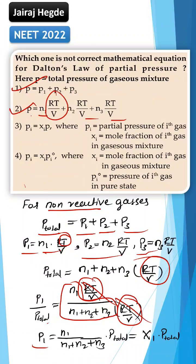So, P1 will be equal to x1 into P total, mole fraction. So, that is why all these three are right. Fourth one is wrong. It is the mathematical expression of Raoult's law, not Dalton's law.